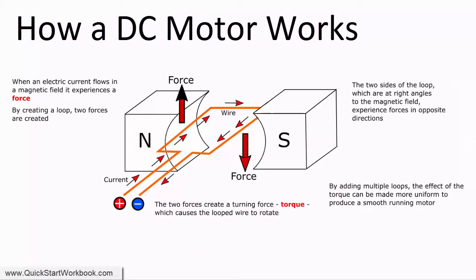So how does a DC motor work? When a wire carrying an electric current is placed in a magnetic field it is subjected to a force that tries to move the wire in a particular direction. If the wire is in the form of a loop as shown here then one side of the wire is pushed up while the other side is pushed down. This creates a turning force which is known as torque. The torque causes the loop of wire to rotate within the magnetic field. In a real DC motor there would be many more loops than shown here which would create a smoother running motor.